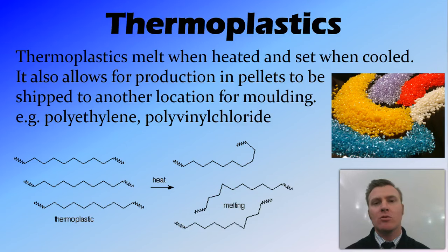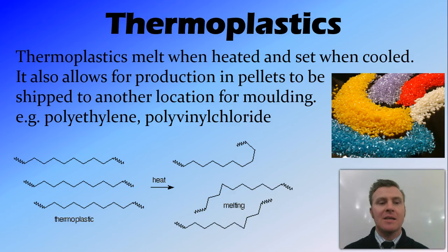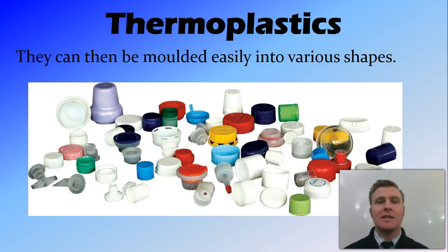Thermoplastics are plastics that melt when heated and set when cooled. Because of this property they can be produced in one factory as pellets, shipped to another place, and then molded into whatever product is needed. Examples of thermoplastics include polyethylene and polyvinyl chloride, and most of the plastics we use in day-to-day life are thermoplastics.